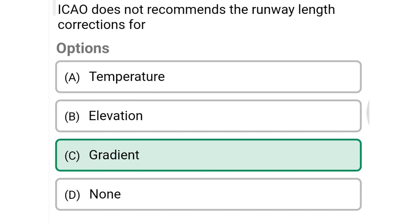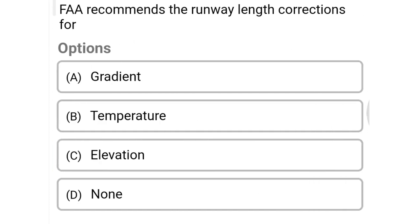Next question: FAA recommends runway length corrections for — option A gradient, option B temperature, option C elevation, option D none of the above. The correct answer is option A, gradient.